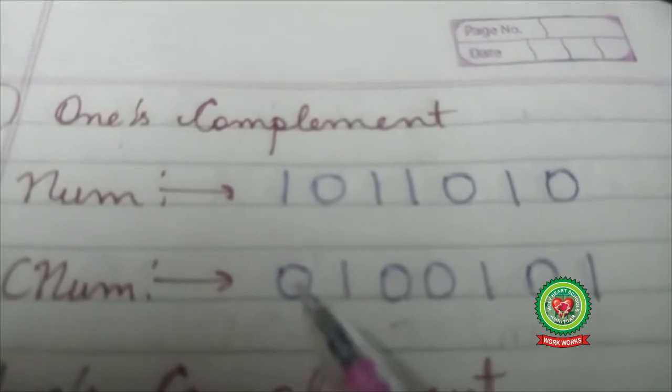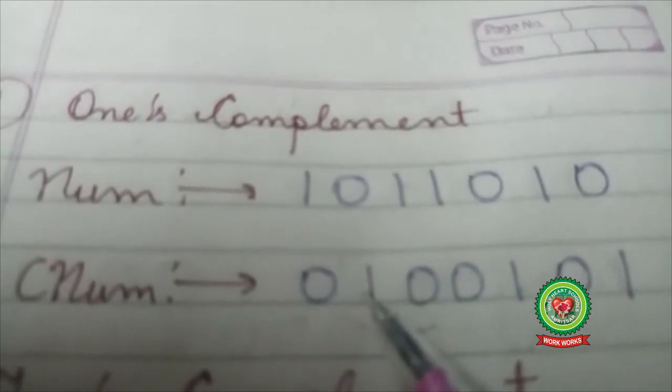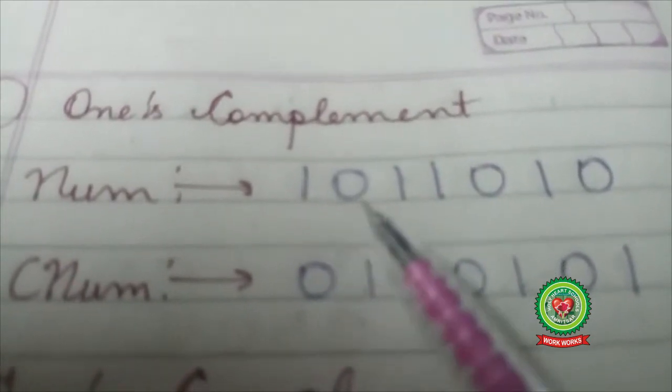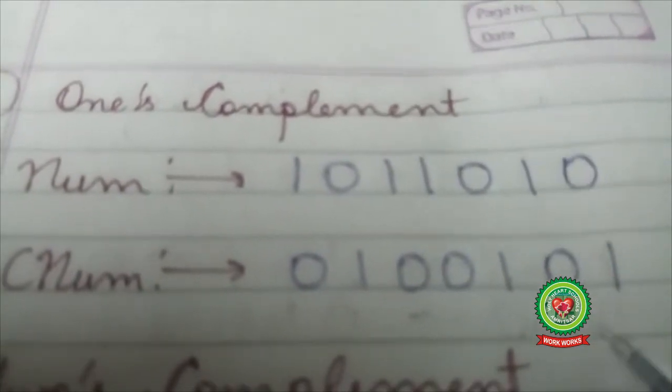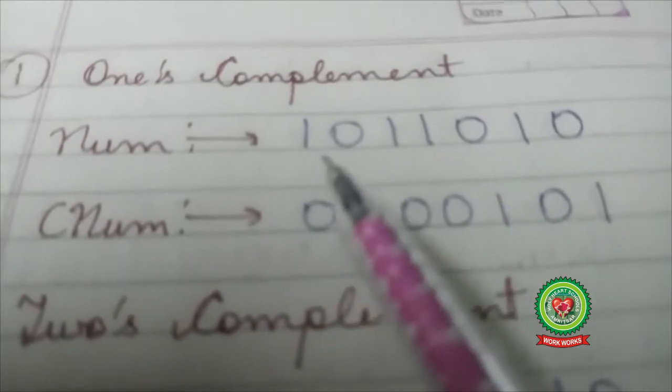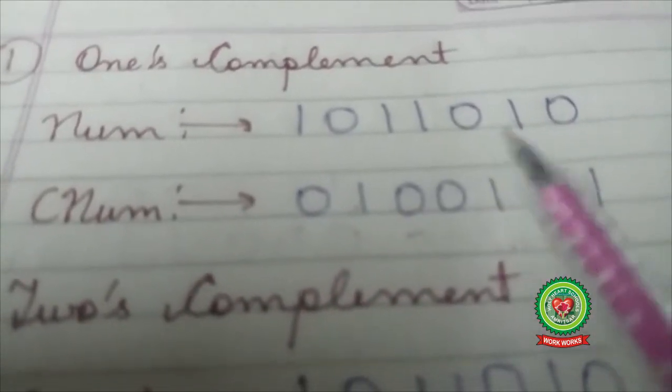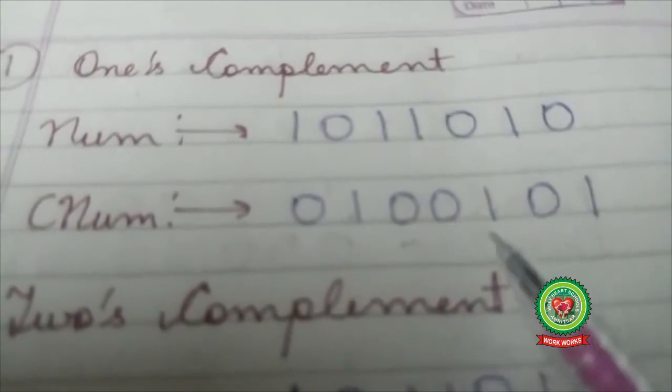The total number of digits in a number remains same. So, one's complement of 1011010 is 0100101.